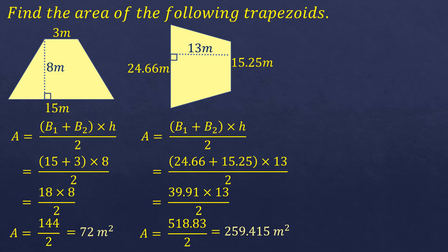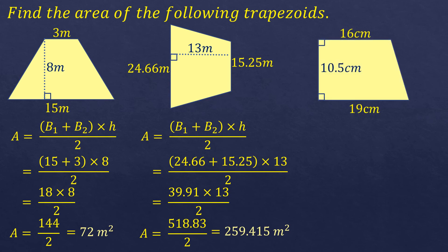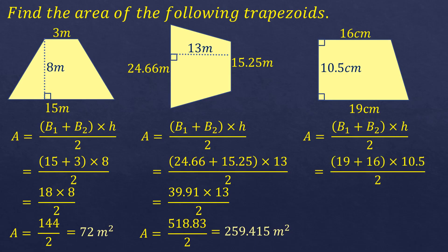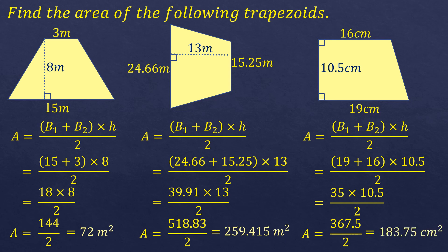You can approximate that to 259.42. It will be up to you or the given instructions. Here's another trapezoid that forms a 90-degree angle. Still follow the trapezoid area formula. Base one is 19, base two is 16. 19 plus 16 is 35, times 10.5 is 367.5, divided by 2 gives 183.75 square centimeters.